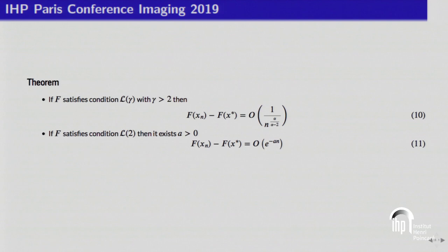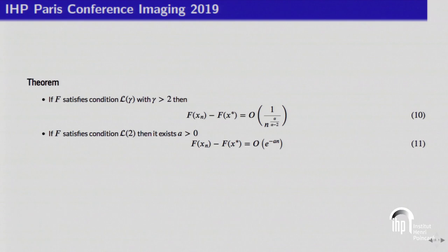Recalling results on classical gradient descent: if you suppose the function satisfies L(gamma) — the growth condition — the decay of F(x_n) minus F(x-star) is big-O of n^{-gamma/(gamma-2)} when gamma is greater than 2. If your function satisfies L(2), meaning it grows faster than a quadratic around the minimizers, then the decay is at least exponential.